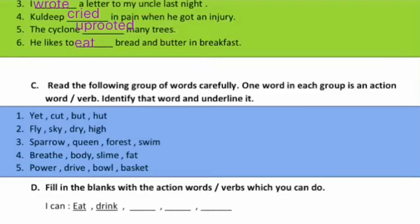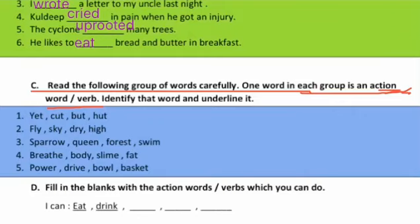Now question number three is: read the following groups of words carefully. One word in each group is an action word — identify that word and underline it. Ab yahan kaun kaun se words pehle set mein diye hain? Vo hain: yet, cut, but, or hut. 'Yet' matlab abhi tak, 'cut' matlab kisi cheez ko kaatna, 'but' matlab lekin, aur 'hut' matlab jhopdi. To kaun sa word action ko bata raha hai? Bilkul theek — 'cut' karna, matlab kisi cheez ko cut karna. So yahan par 'cut' ko underline kar denge.